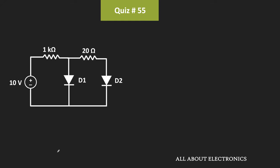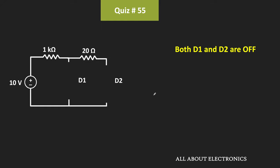For the given circuit, let's consider all four cases one by one. First, let's consider both diodes D1 and D2 are OFF. If they are in the OFF condition, no current will flow and they will act as open circuits. In that case, the voltage across both diodes will be equal to 10V. Since 10V is more than 0.7V and 0.3V respectively, they should conduct — meaning this condition is not true.